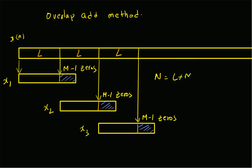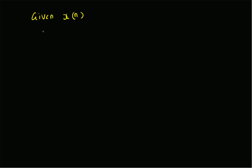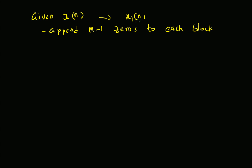Similarly, for x2(n) we take the next L values from x(n), that is from the original data sequence, and then append another M minus one zeros, so x2(n) is also of length N. We continue the same process for the next blocks. Given x(n), we divide it into xi(n) — individual blocks of length L — and then append M minus one zeros to each block so that the overall length capital N is the same for each block.